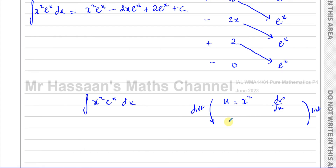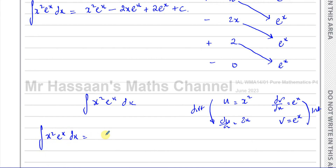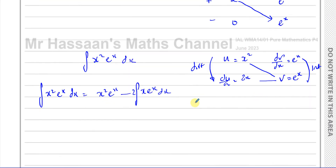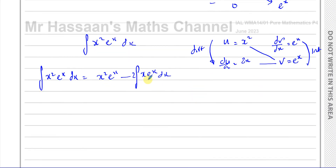So x squared is differentiated, giving du/dx equals 2x. And dv/dx is e to the power of x, which becomes v equals e to the power of x when integrated. Then you write: the integral of x squared times e to the power of x dx equals x squared times e to the power of x minus the integral of 2x e to the power of x dx. Here again we have to integrate a second time because we have a product of two unrelated functions, so we use parts again.